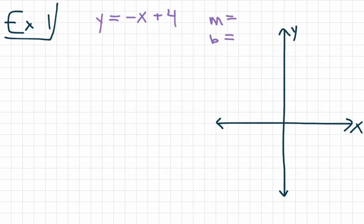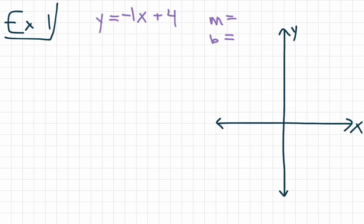m is our slope, b is our y-intercept. We talked about this back in modules 3 through 6 — if you need to go back to those notes to recall how to do this, that's fine. For our slope m, we're looking for the number in front of our variable x. All we have there is a negative sign, but we remember we can put a 1 there if no number is written. So our slope m is negative 1, written as a fraction: negative 1 over 1. For our y-intercept b, that's our constant term — whatever number we're adding or subtracting. In this case we're adding 4, so our y-intercept is 4.